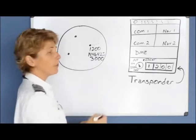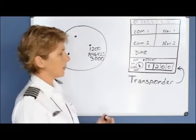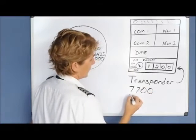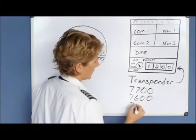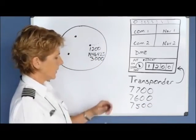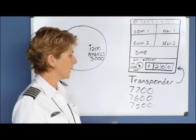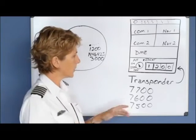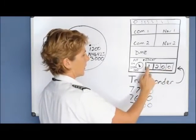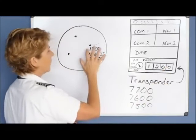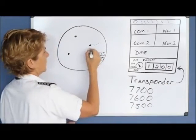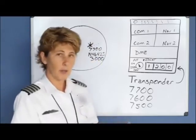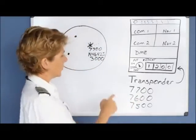If you have an emergency, the different codes you could use are 7700, 7600, and 7500. The 7700 is used for an all-out emergency — for example, your aircraft is on fire, your engine stopped working, or you had a medical emergency. Anything like that, you would put 7700 into your transponder. On the radar screen, it would show up as 7700 and it makes yours flash — in some cases it will even blink 'help me' — so they know you're having an emergency.